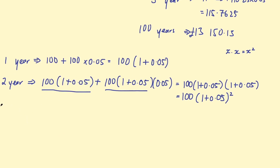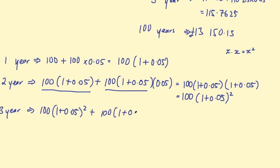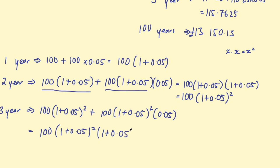Onto the third year — we take the amount from the second year and add the interest on it. Taking the second-year expression and multiplying by 5% again, we can factorise out 100 times (1 + 0.05) squared, and this gives us 100 times (1 + 0.05) squared multiplied by (1 + 0.05). We've got something squared multiplied by that same thing, so this can be written as 100 times (1 + 0.05) cubed.